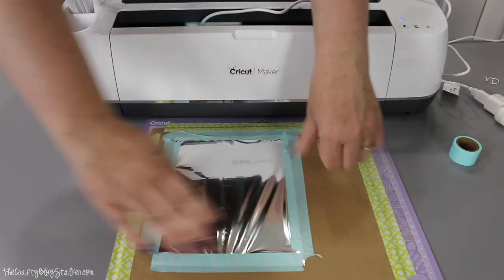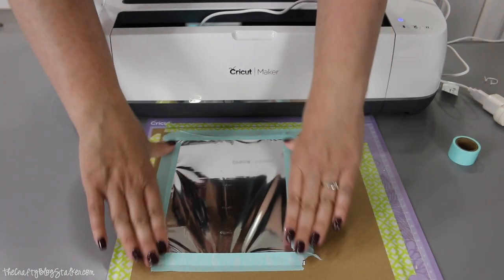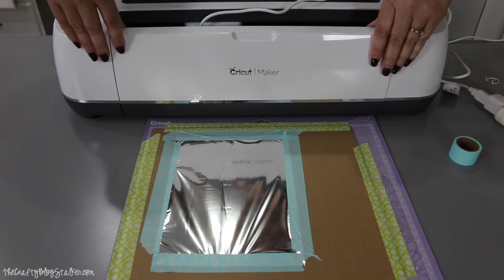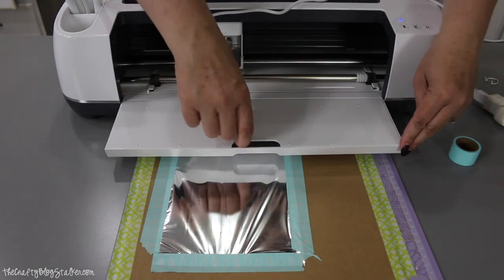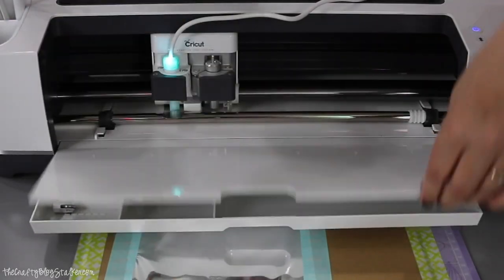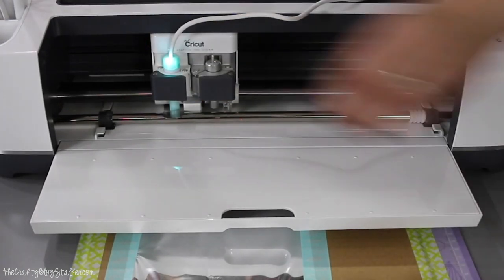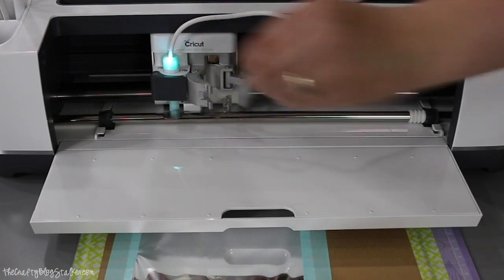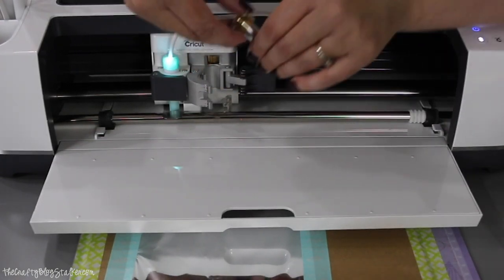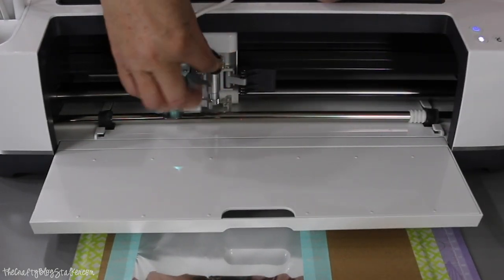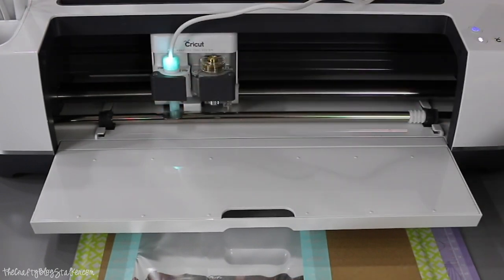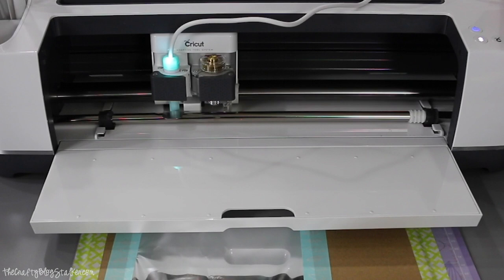So again, we're going to pull that nice and tight and then do one more edge. Now the Cricut Maker, it draws before it cuts. So it's going to do the foiling first and then it will cut that chipboard, which reminds me we need to put in the knife blade. So there is our chipboard mat and now I'm going to open this and I am going to get out that knife blade. I'm going to take out the standard blade that is in there. This pops right out. And then there is our knife blade.